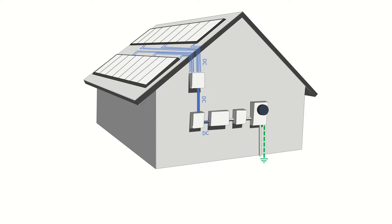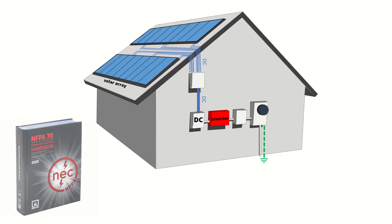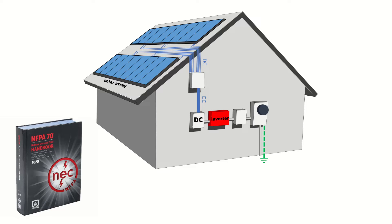In a solar electric system, the DC disconnect, often called a PV disconnect, will be placed between the solar array and the power inverter so that it can easily be thrown if you or the fire department needs to shut off the power coming from the solar array. Safety switches like this are a necessity in most residential and commercial applications in accordance with the National Electric Code or NEC.